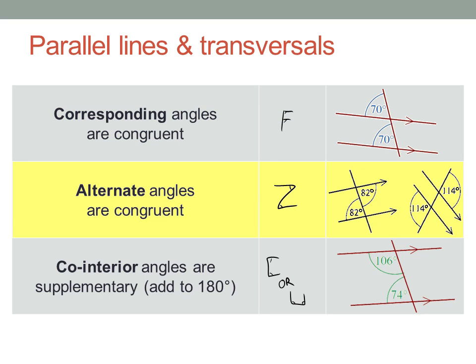Alternate Angles at a transversal are also congruent. If you go across the transversal, from one parallel line to the other, you'll get the same size angle. Can you see the Z from the symbol? Again, sometimes it may be backwards. The outer angle case on the right may not be as easy to see, but remember that the vertically opposite angles inside the Z are also going to be congruent to the ones outside the Z. Alternate Angles are congruent.